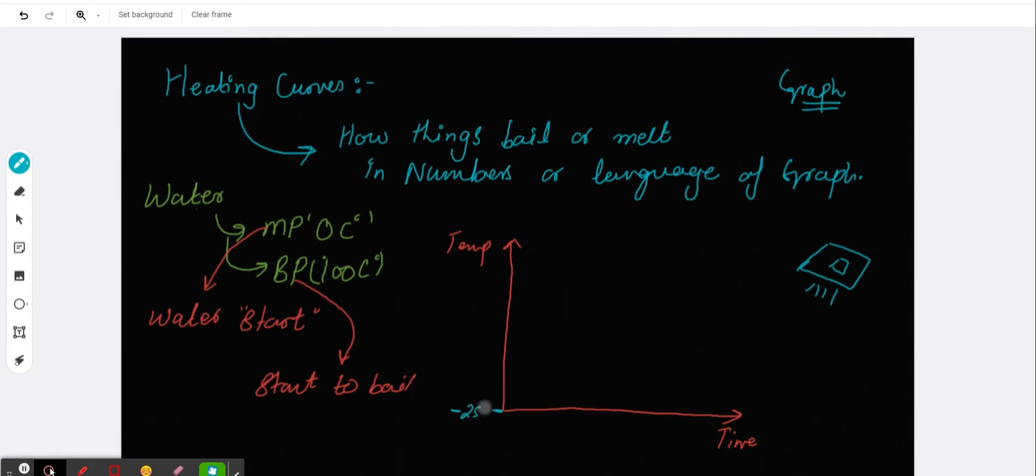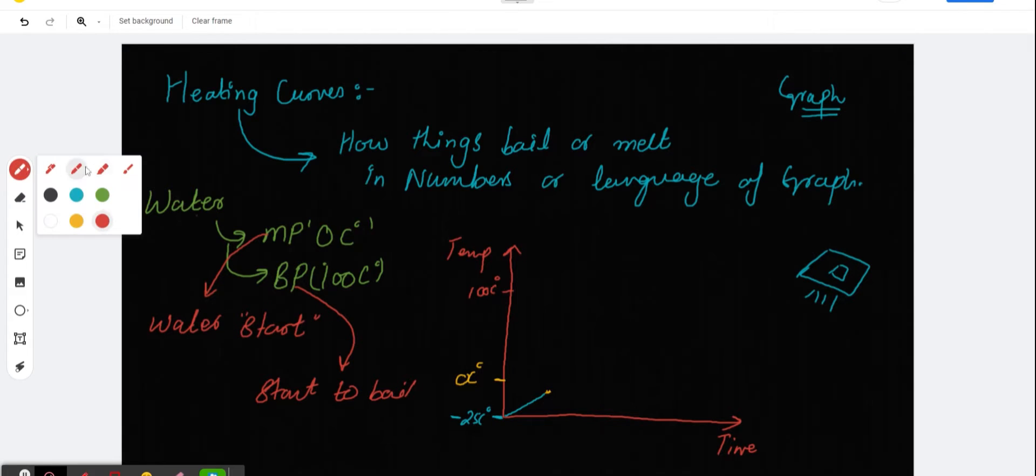So there the ice cube was there and nothing was happening. As you know, the temperature is going up, so that's why my line is there. Now, once it reaches zero Celsius, what will happen? My ice gonna start to melt at this point. So at this point, exactly, the ice gonna start to melt and the temperature will remain there.